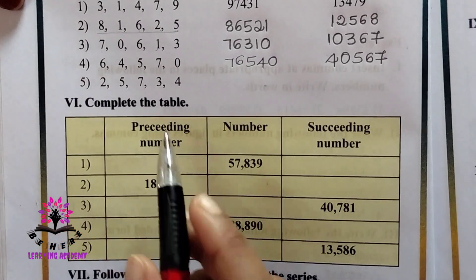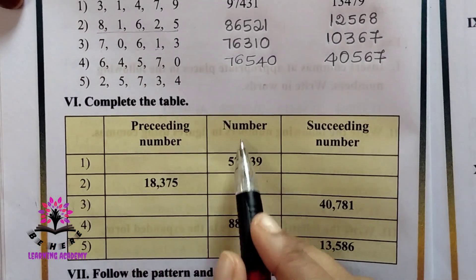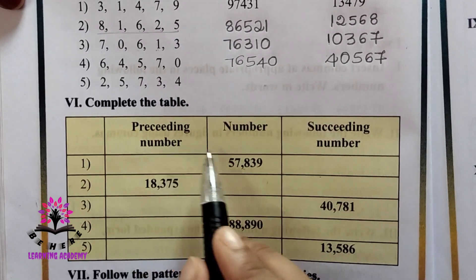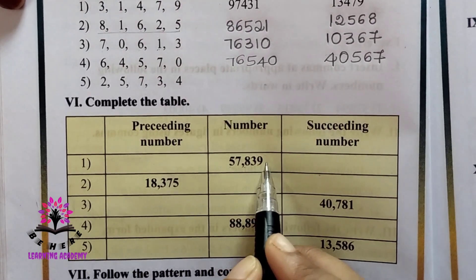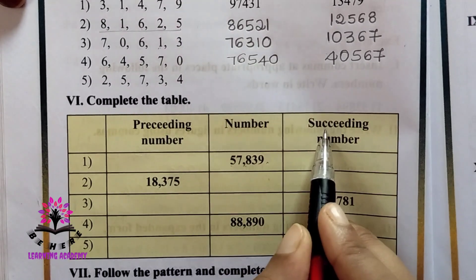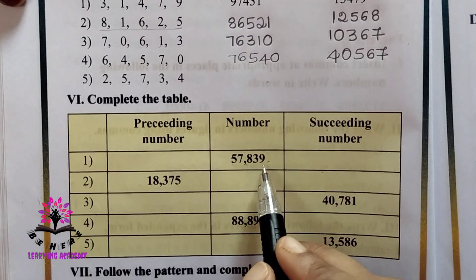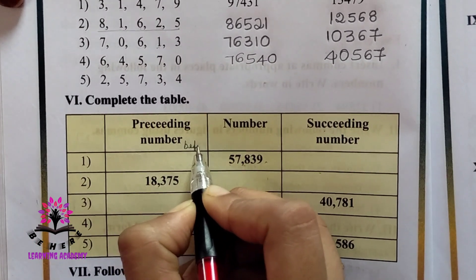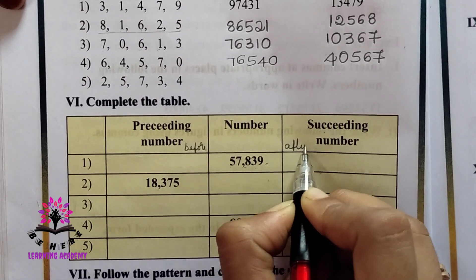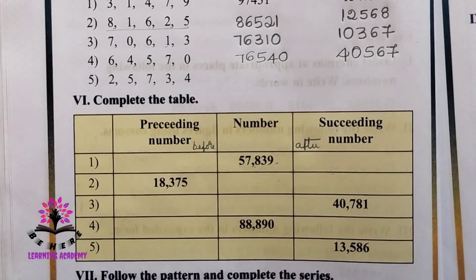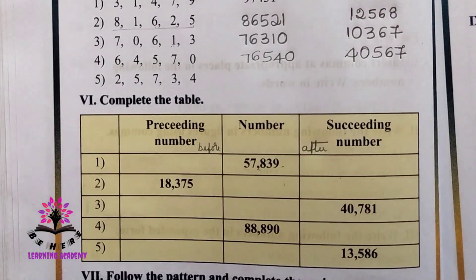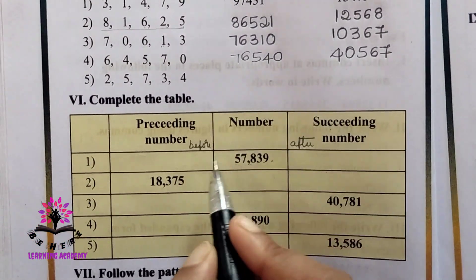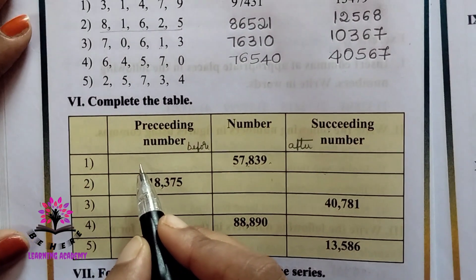Number 6: complete the table. Here you have to write the preceding number and the succeeding number. Preceding number means the number which comes before the given number. Succeeding number means the number which comes after the given number. So preceding means before and succeeding means after.